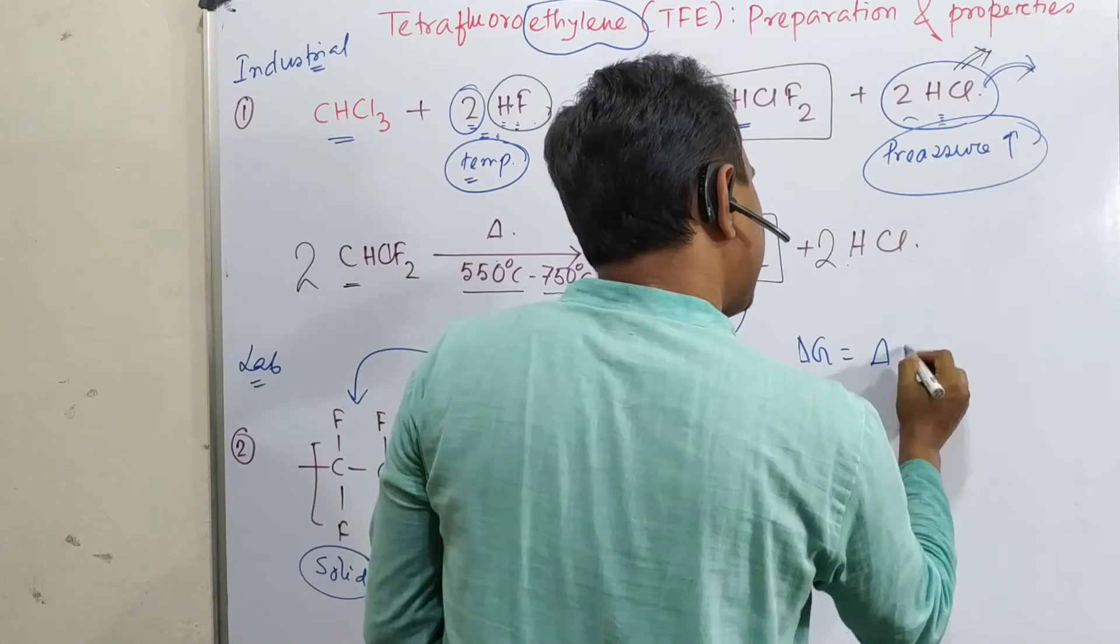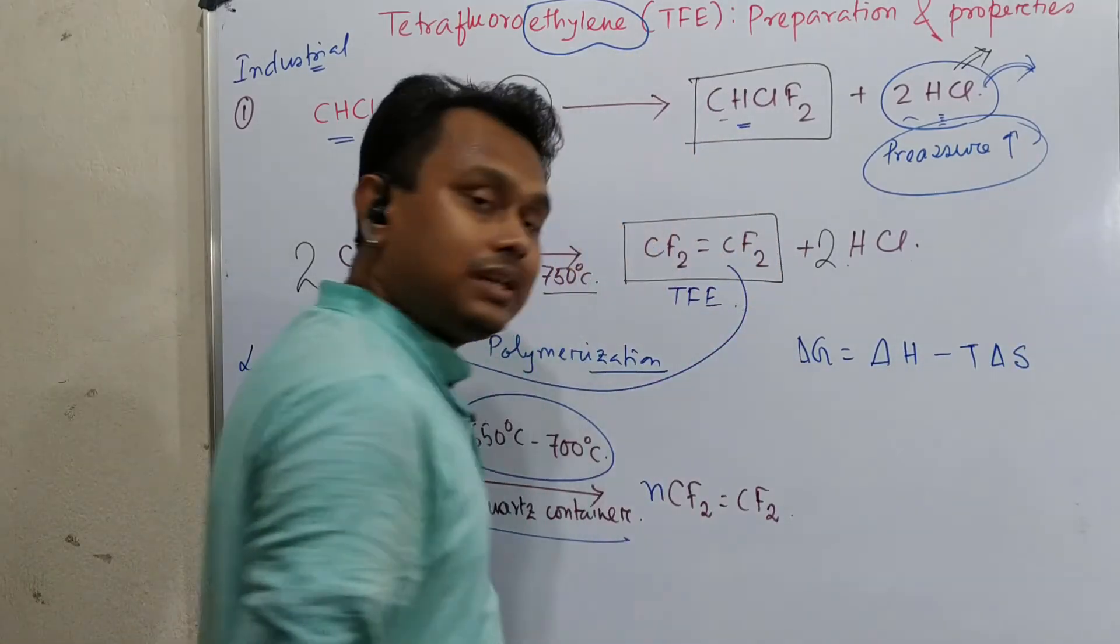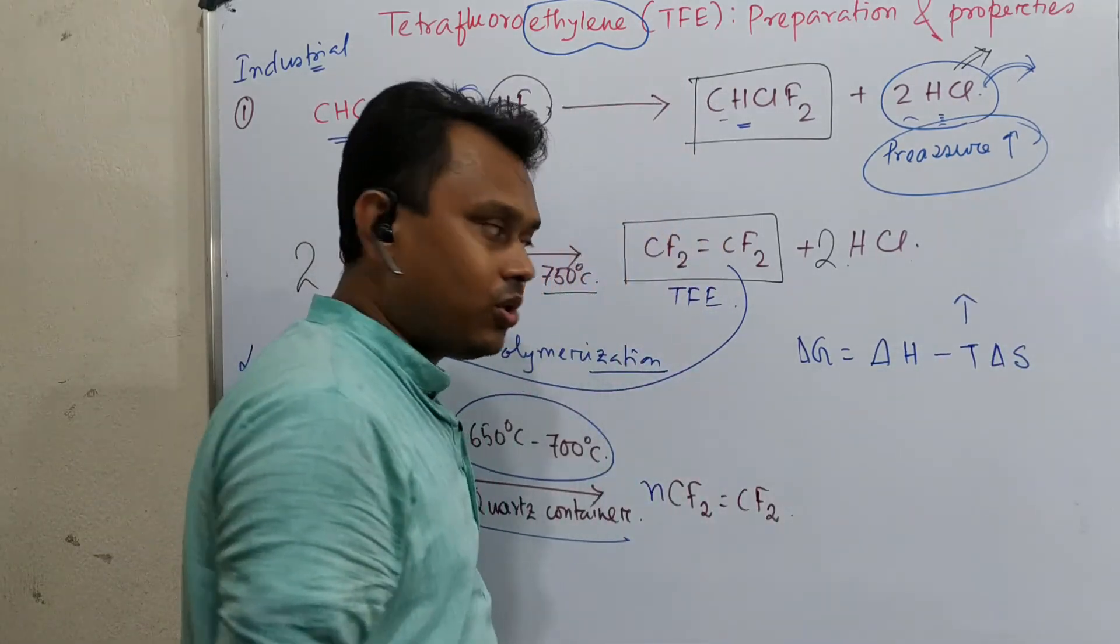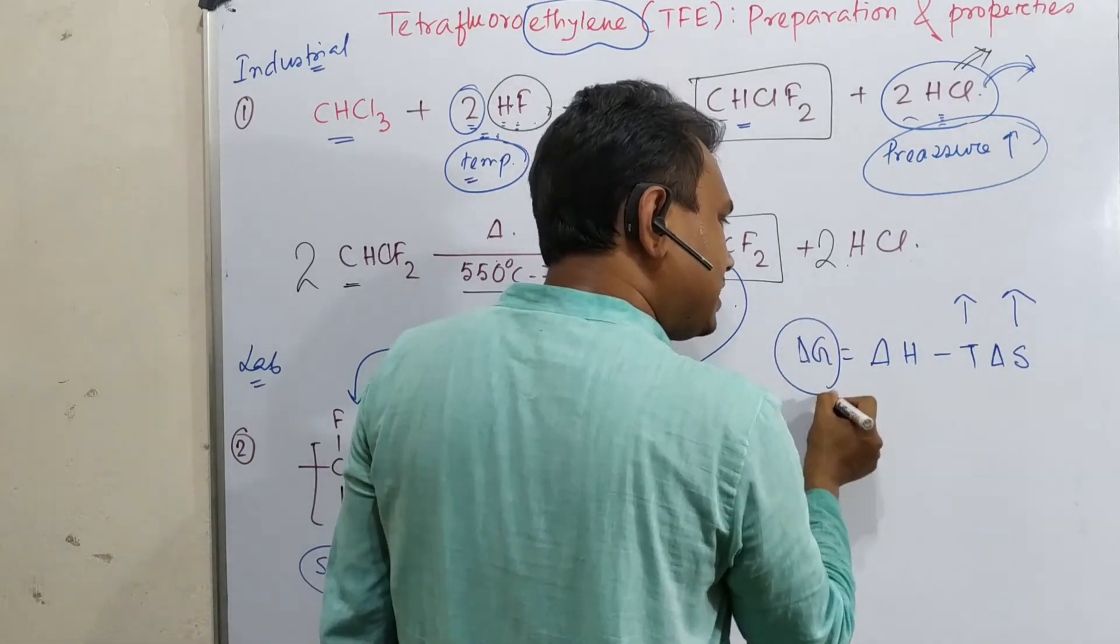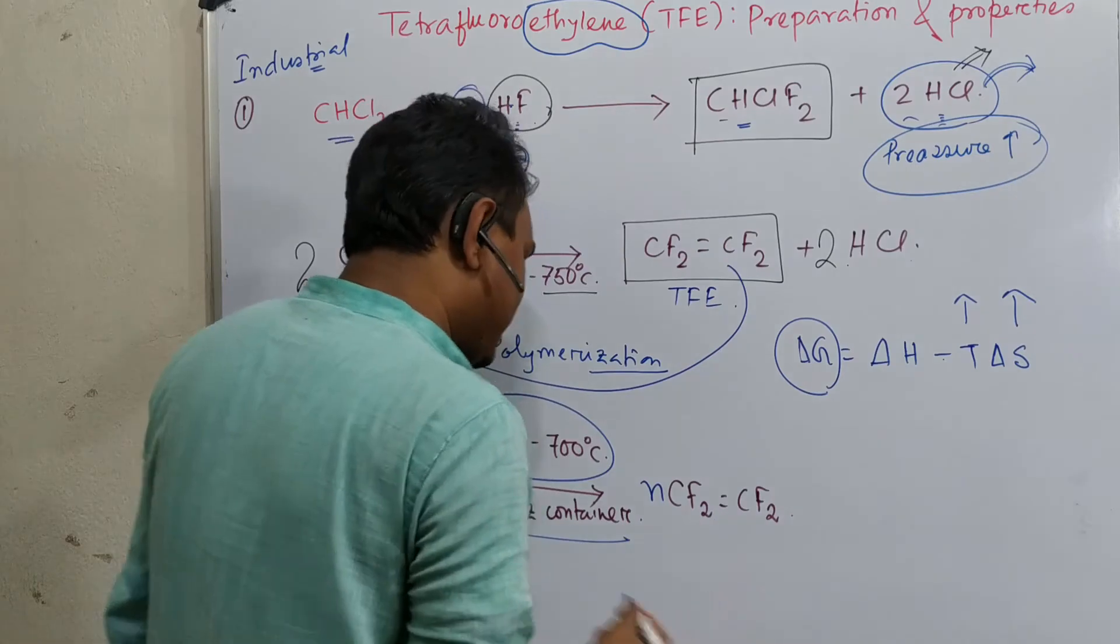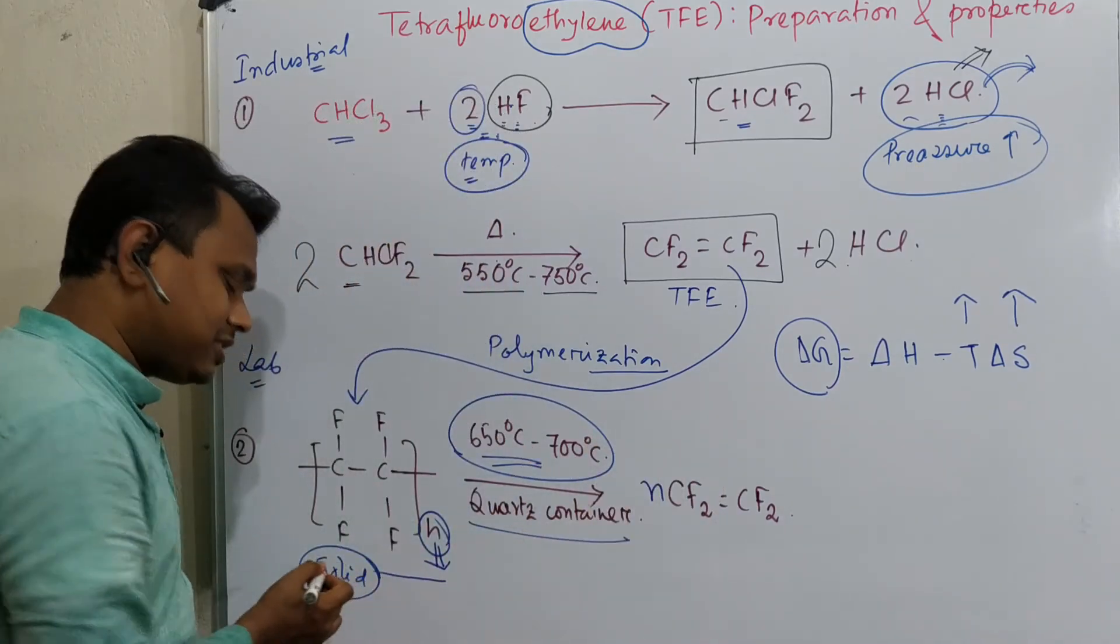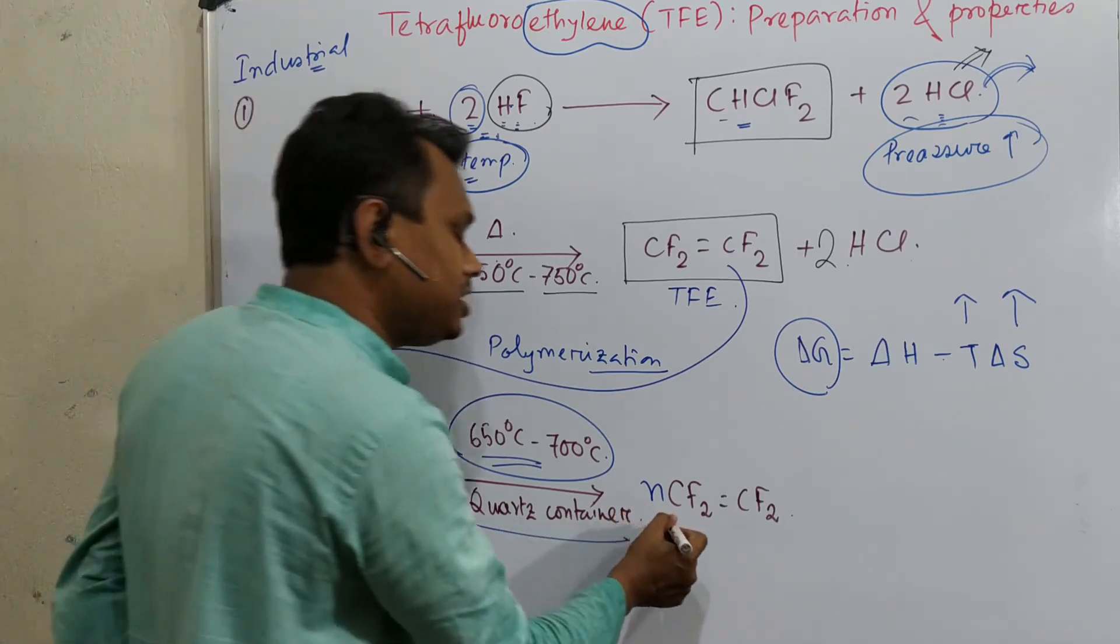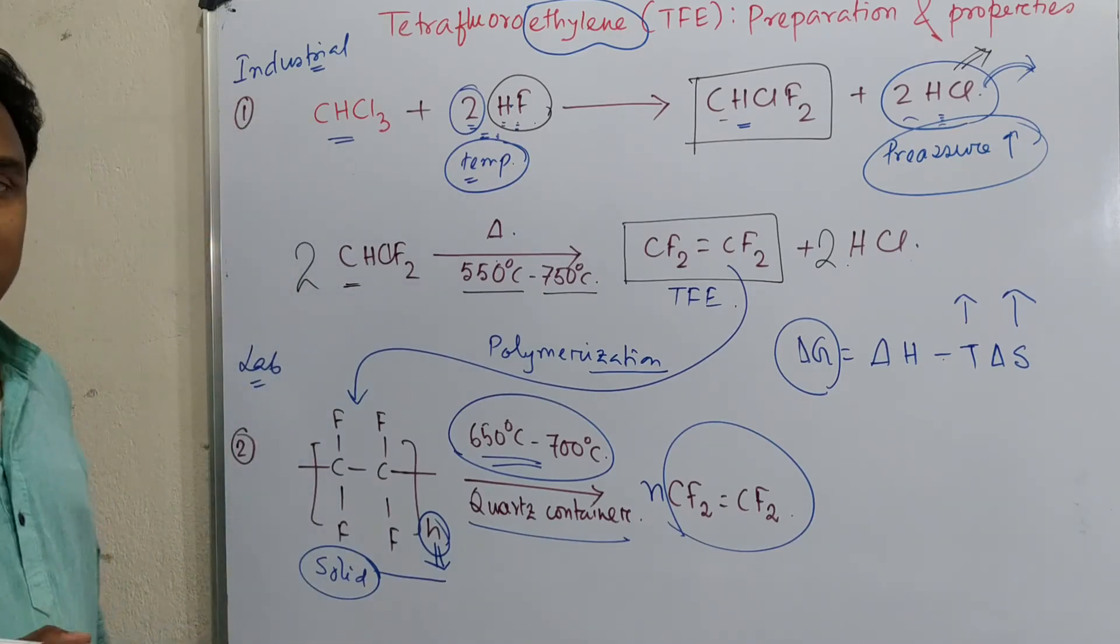Now just look at the reaction. In higher temperature, the contribution of T is more. Then increasing entropy will favor the more ΔS. Means this is negative, so ΔG will be more negative. So temperature is more, 650 degrees. And what happens? One polymer, it is a big molecule. From one molecule of polymer you can get many molecules of monomer. So entropically this is favorable. That's why.